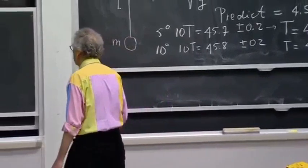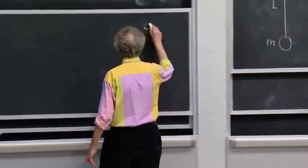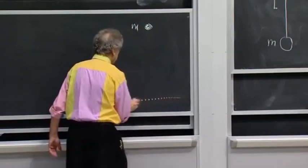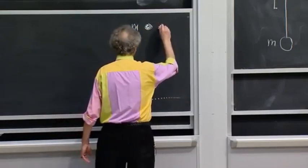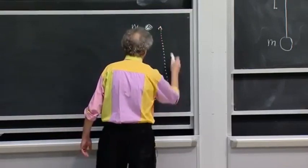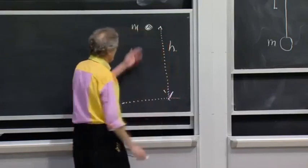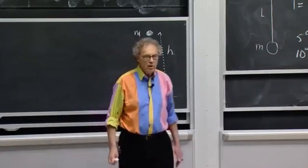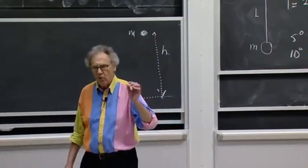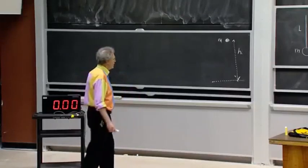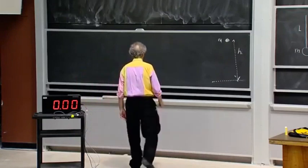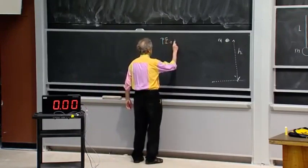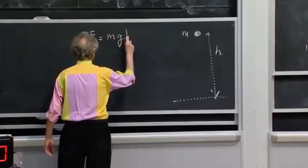Suppose the object has a mass m and is a distance h from the floor. Here's the floor, here's the object, h. We associate with the position of that object an energy that has a name. We call that potential energy.